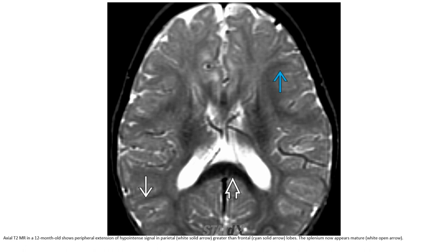T2 image in a 12-month-old shows peripheral extension of hypointense signal in parietal regions, greater than frontal. The splenium now appears fully mature.